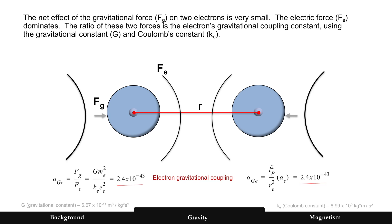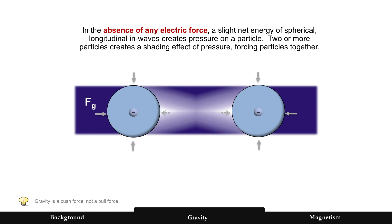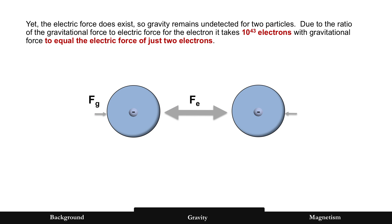So gravity pales by comparison to the electric force. But let's just say that electric force is neutralized. So in the absence of any electric force, what would happen? There's a slight net energy of spherical longitudinal in-waves that creates pressure on a particle. But now when you put two or more of those together, you get a shading effect of pressure. Same thing as the radiation pressure, which is witnessed. And what does that do? It forces two particles together. So gravity is not a pull force. It's a push force.